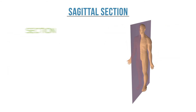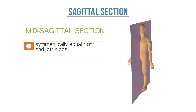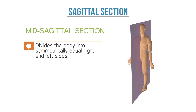On the other hand, a mid-sagittal section is made if the cut is directly along the midline of the body. The mid-sagittal section, or median plane, divides the body into symmetrically equal right and left sides.